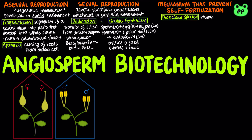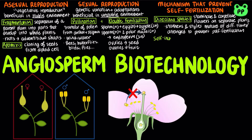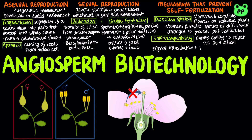Dioecious species have staminate and carpellate flowers on separate plants. In other plants, stamens and styles mature at different times or are arranged in a way to prevent self-fertilization. The most common mechanism is self-incompatibility, which is a plant's ability to reject its own pollen, usually through a signal transduction pathway leading to a block in the growth of a pollen tube.